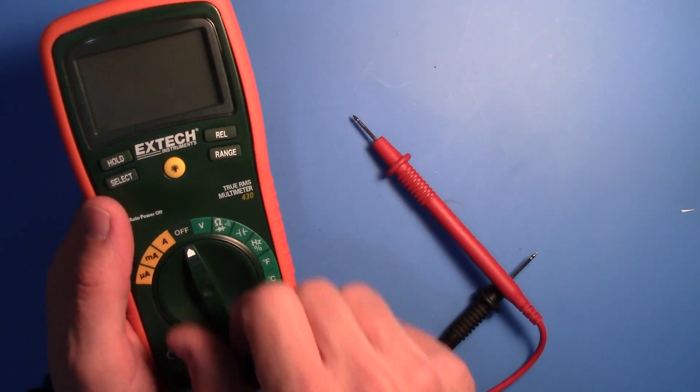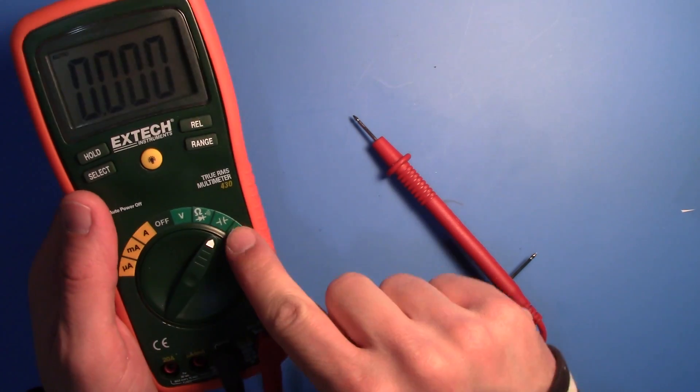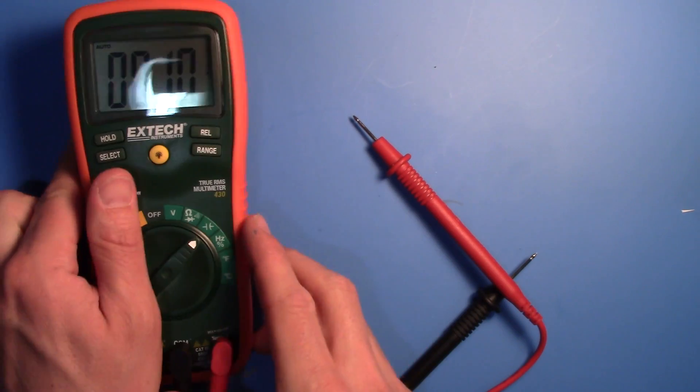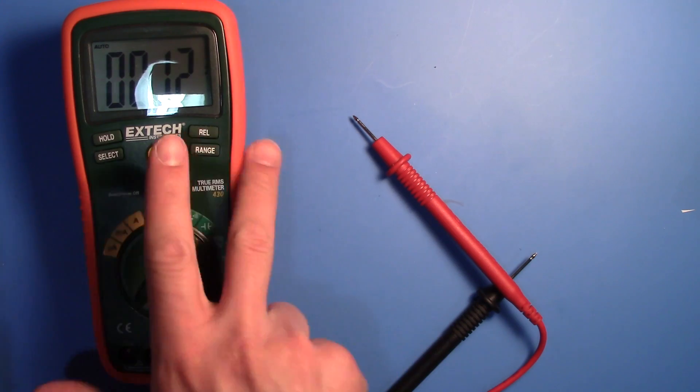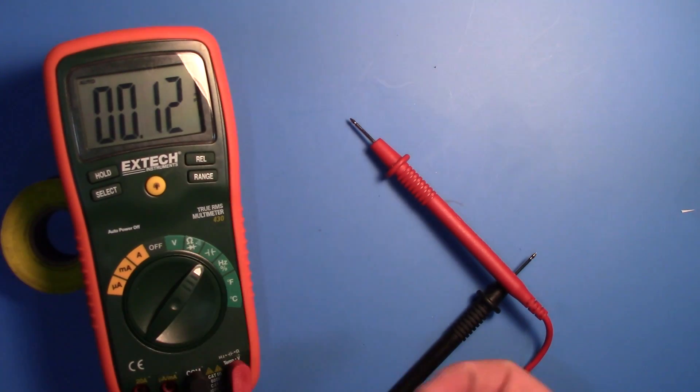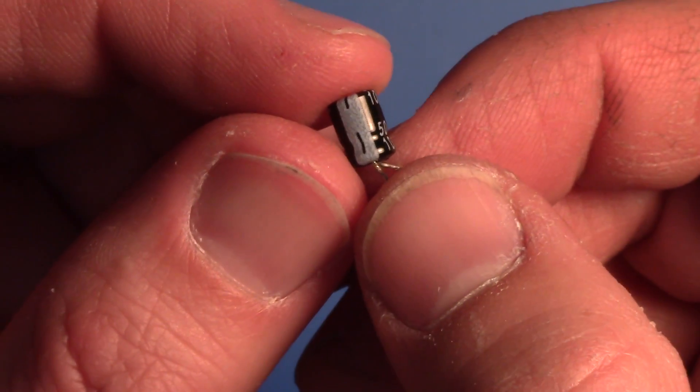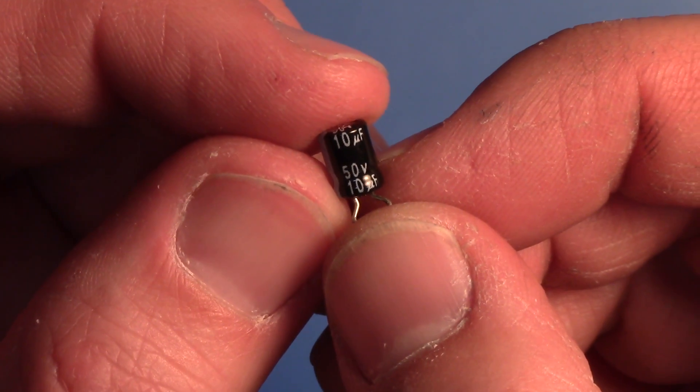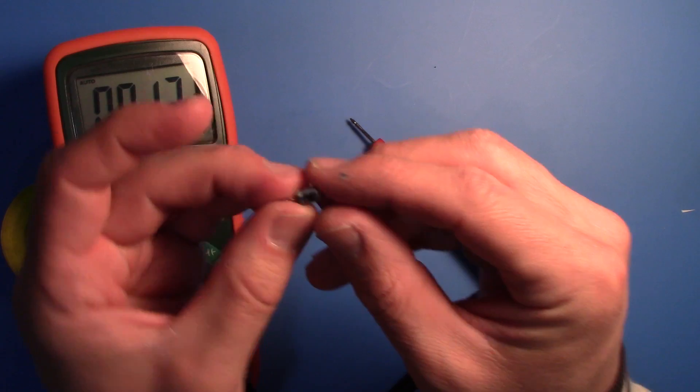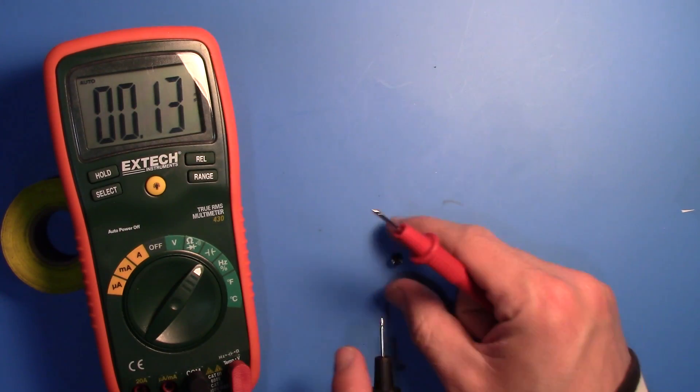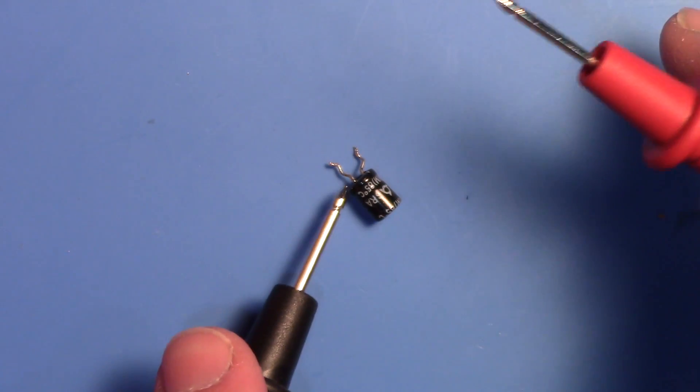If your multimeter can test capacitance, flip it over to that setting. This capacitor is rated at 10 microfarads at 50 volts. So let's see if it's coming out at 10 microfarads.